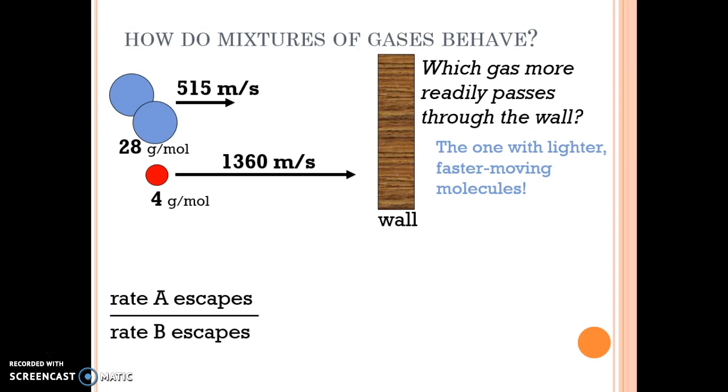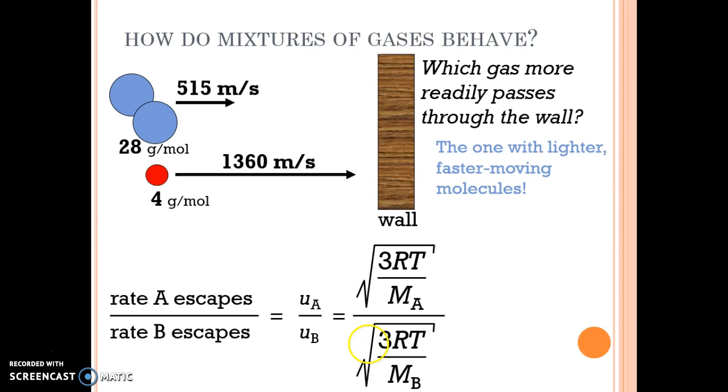In terms of the rate of effusion, the rate of escape of A divided by the rate of escape of B is equal to the ratio of their root mean square speeds. We also know that the root mean square speed equals the square root of 3RT divided by the molar mass.